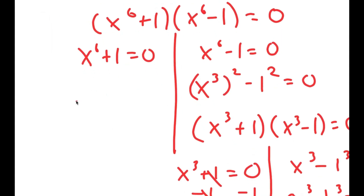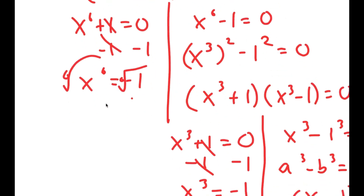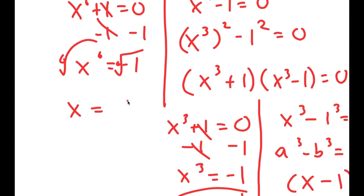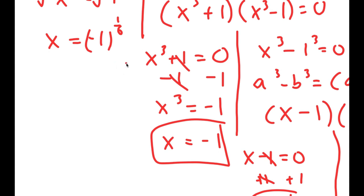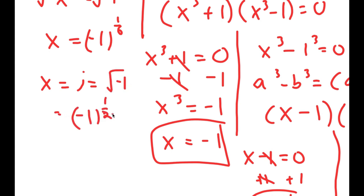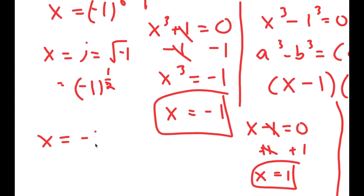Now for x to the power of 6 plus 1 equals zero, I subtract 1 on both sides to get x to the power of 6 equals negative 1. Taking the sixth root, I get x equals the sixth root of negative 1, which equals negative 1 to the power of one over six. We know that i equals the square root of negative 1, which equals negative 1 to the power of one half.